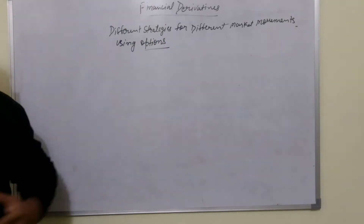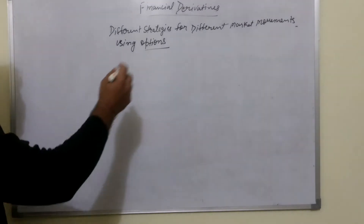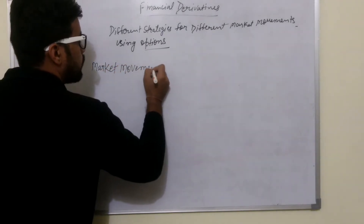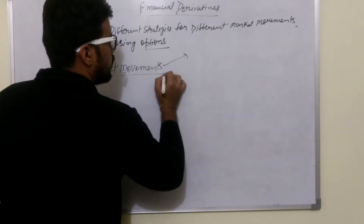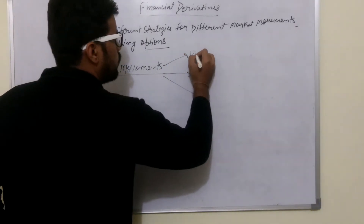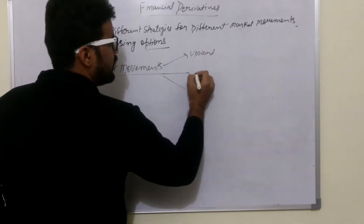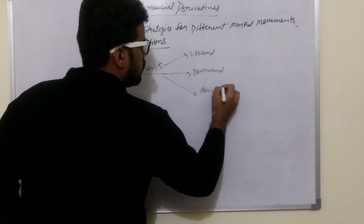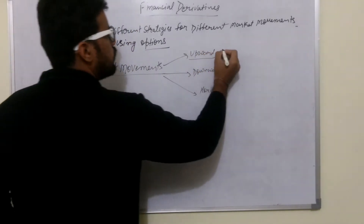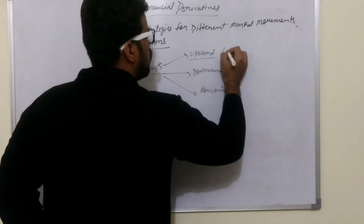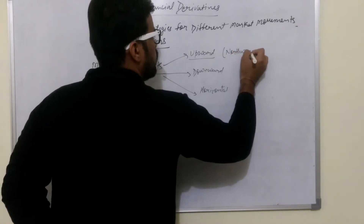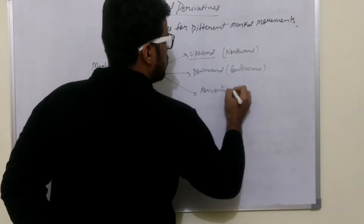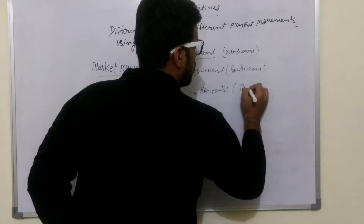First of all, we need to understand what market movements are. Generally, we can categorize them into three categories: one is upward, second is downward, and third is horizontal. The upward movement we can also call the northward movement, downward we call the southward movement, and the horizontal is flat, straight, linear.